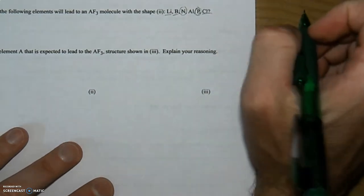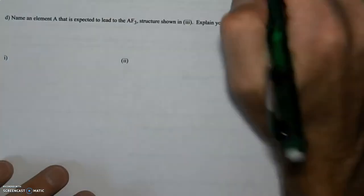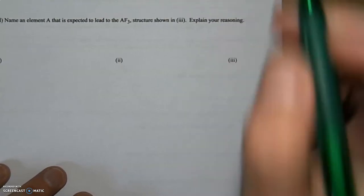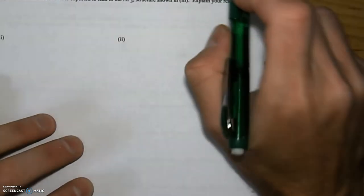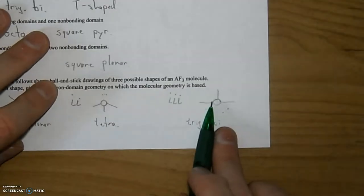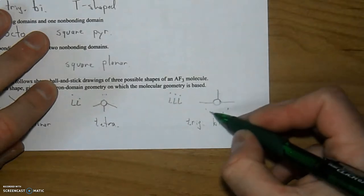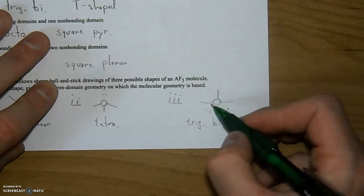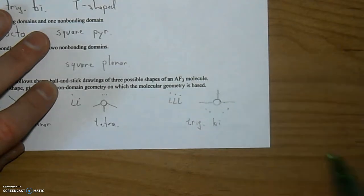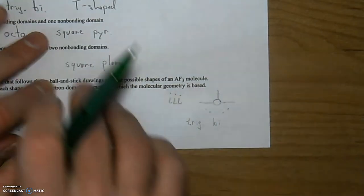Part d, name an element, a central atom, that is expected to lead to the third choice, AF3 molecule, giving us this shape here. So we need something that's going to have one, two, three, four, five, six, seven valence electrons hanging out there on the outside. So one, two, three because you're sharing, and then you still have four others. So a total of seven valence electrons. So who has seven valence electrons out of these guys listed here?